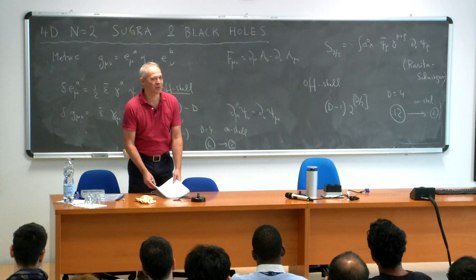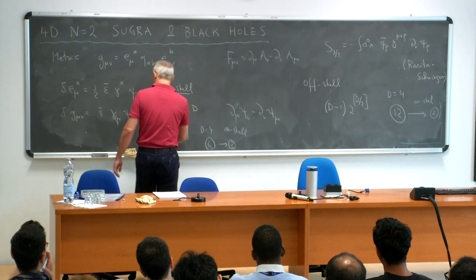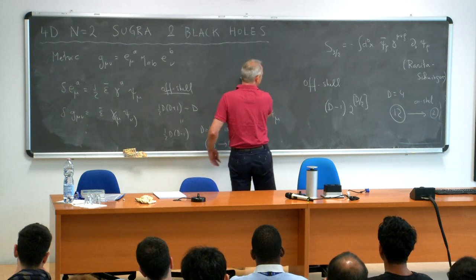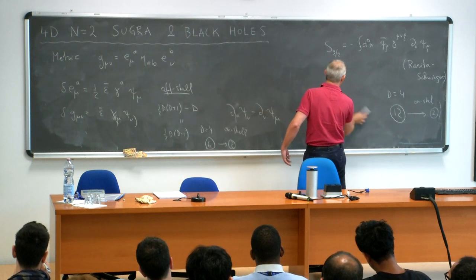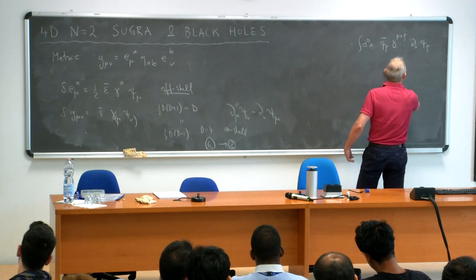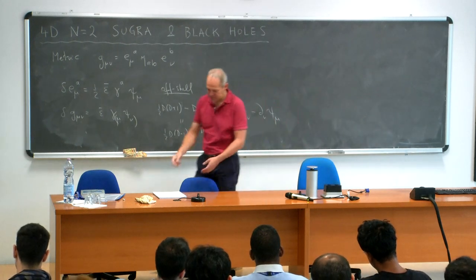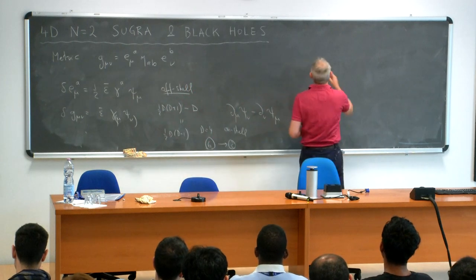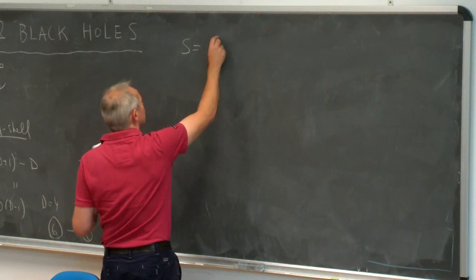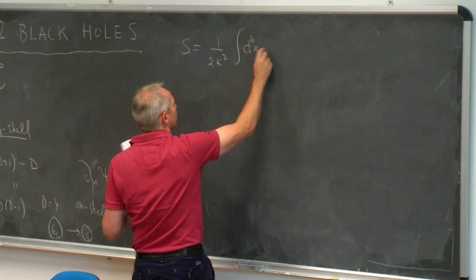On-shell we do have a matching. The first supergravity theories were constructed by Freedman, Ferrara, and van Nieuwenhuizen. I'll write down the answer restricted to four dimensions. This is N=1 supergravity — minimal supergravity, not coupled to anything yet. There is no matter; I'm writing this down to set the stage and explain the conventions.